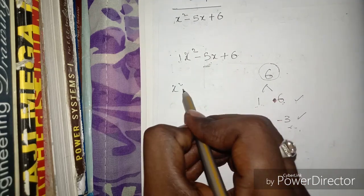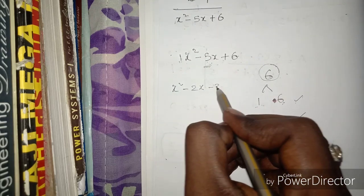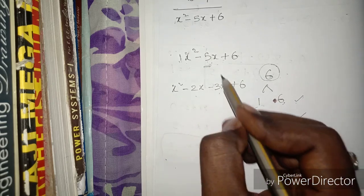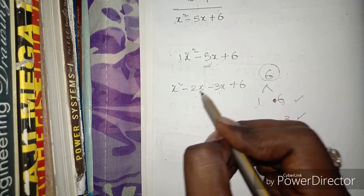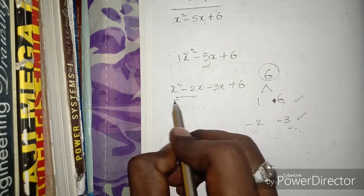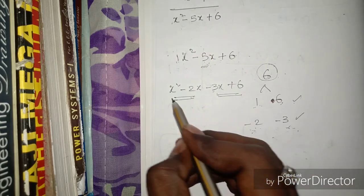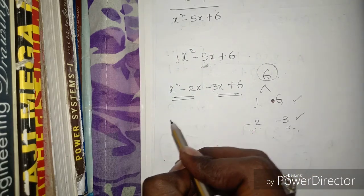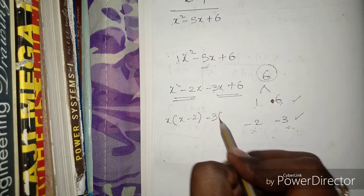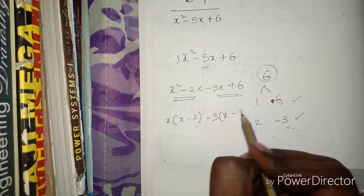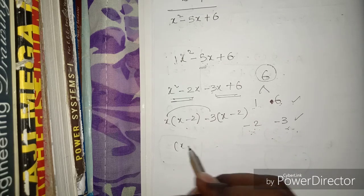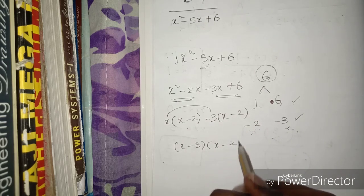So we write x² - 2x - 3x + 6. We group: x(x - 2) minus 3(x - 2), giving us (x - 3)(x - 2). That is the factored form.